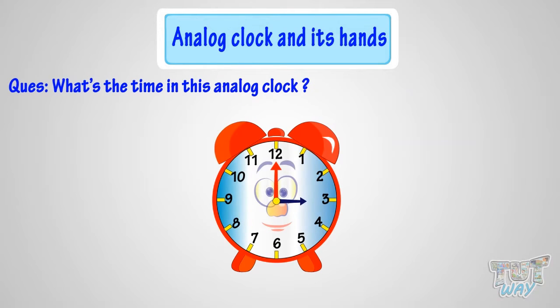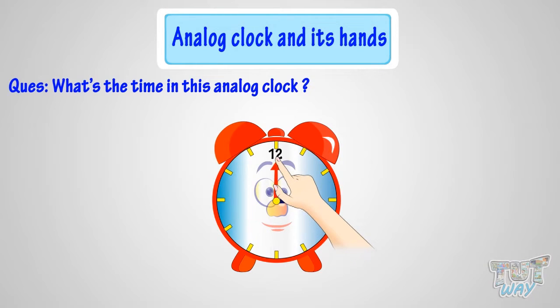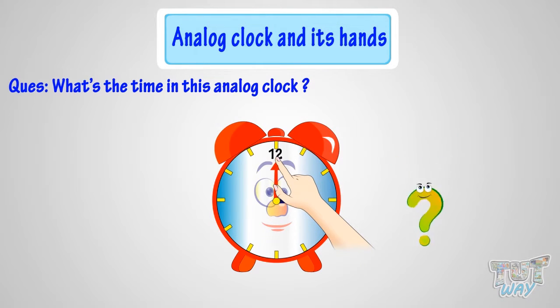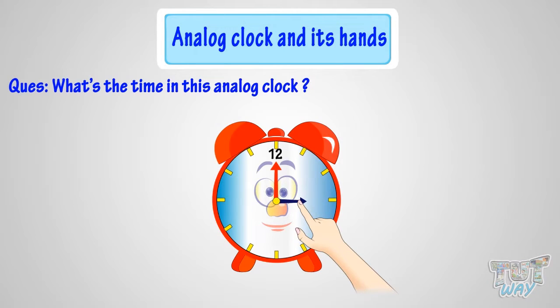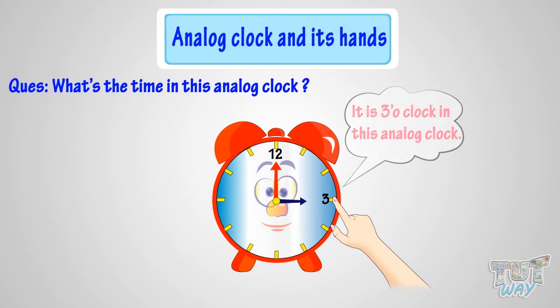Can you tell me what's the time in this analog clock? When the minute hand is at 12, it is time to the hour. But to which hour? The hour hand tells the hour. And the hour hand is pointing at 5 here. So, it's 5 o'clock in this analog clock.